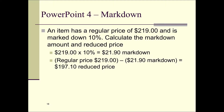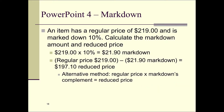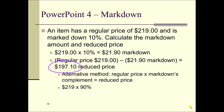If you want to use the alternative method, take the regular price and multiply it by the markdown's complement. You would multiply $219 times 90%, and that gives us the $197.10 reduced price.